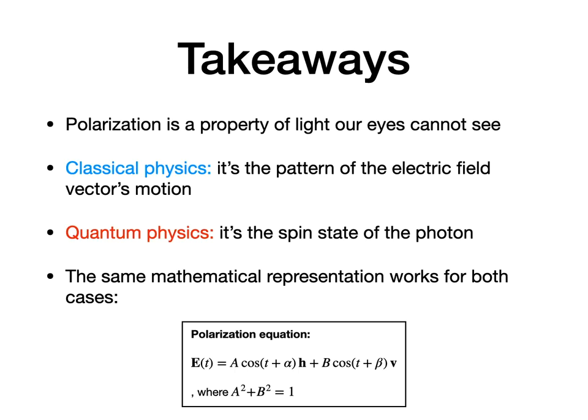And finally, here is a quick summary. Polarization is a property of light our eyes cannot see. In classical physics, polarization is the pattern of the electric field vector's motion. On the other hand, in quantum physics, polarization is the spin state of the photon. Although the physical interpretation in classical and quantum physics are different, the same normalized, directed ellipse representation can be used in both cases.